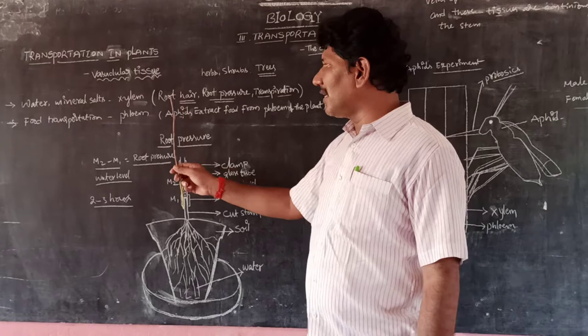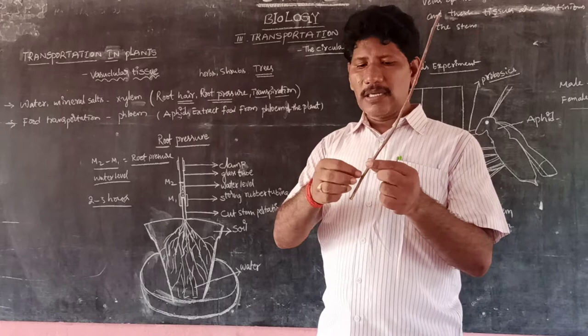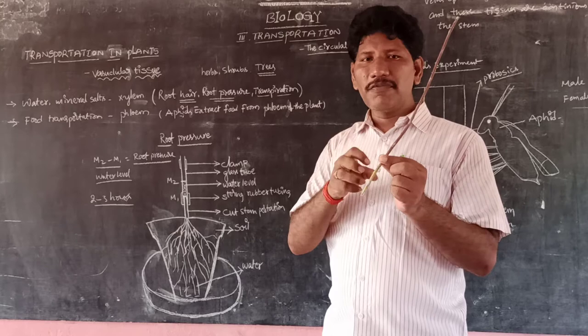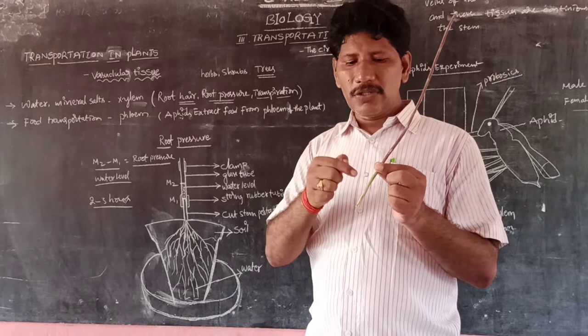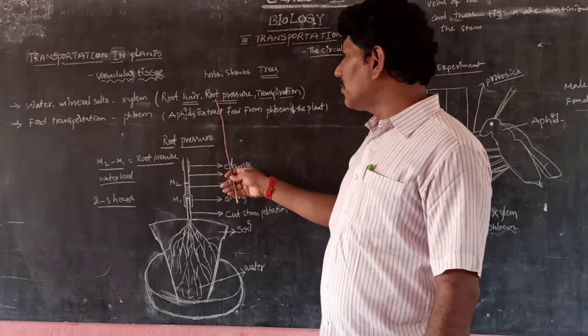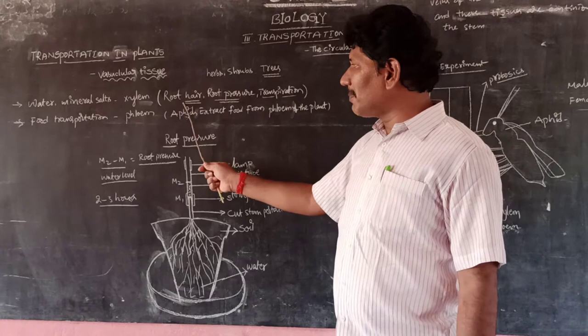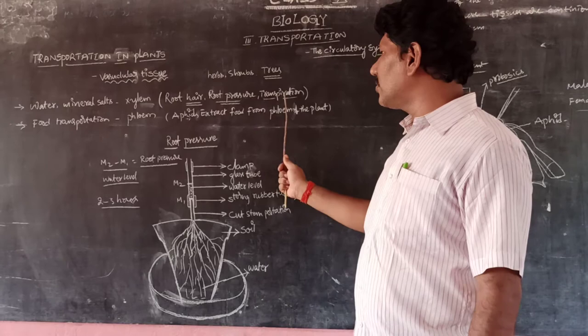Those three parameters are: first, root hair — small hair-like projections that pull water towards the root; second, root pressure — the pressure that pushes water upward against gravitational force; and third, transpiration, evaporation, or guttation.